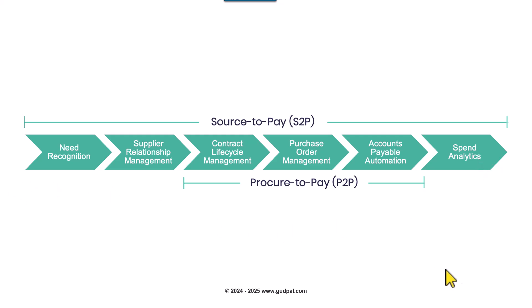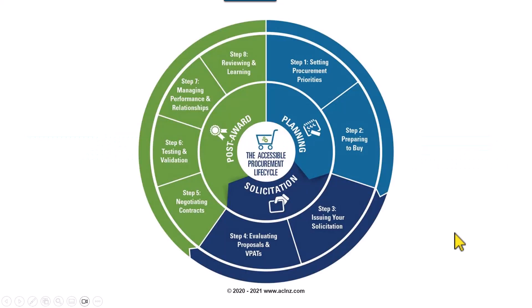So this is one diagram of sourcing as well as procurement business process flow in Oracle at a very high level. In fact, this diagram can be applied from a business perspective as well. The next step is another diagram to explain the functionality in a little more detail — for example, step one is setting the procurement priorities, step two is preparing to buy.